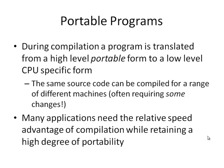During compilation, we take a program from a high-level portable form to a low-level form specific to a particular processor. The same source code can be compiled for a range of different machines, often requiring some changes — some of which can be implemented using preprocessor directives. For example, depending on whether you're compiling for a Mac or a Windows PC, different libraries might be included. Many applications need the relative speed advantage of compilation while retaining a high degree of portability.